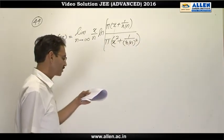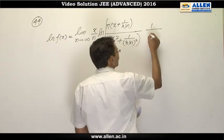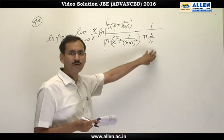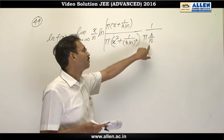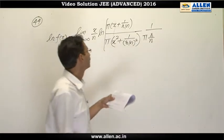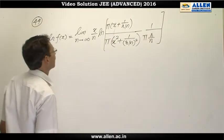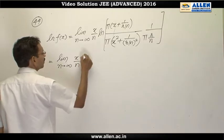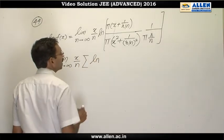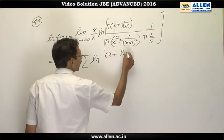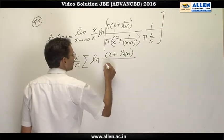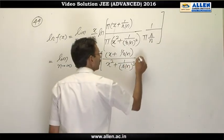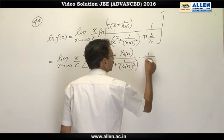I will write x square plus 1 upon r by n whole square. This is the product of all these terms multiplied by 1 upon r by n in the product form because it is n factorial upon n raised to the power n. n factorial is 1, 2, 3, 4 up to n divided by n raised to the power n. So I can write it product of r by n.